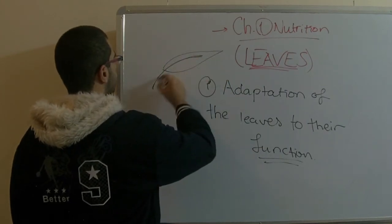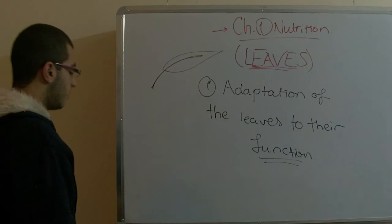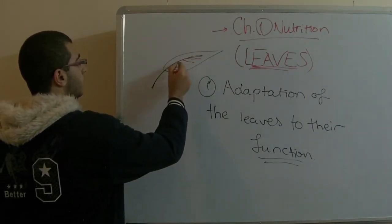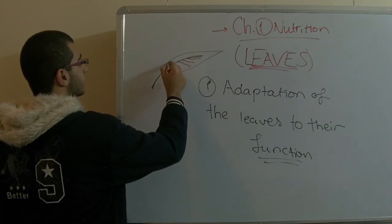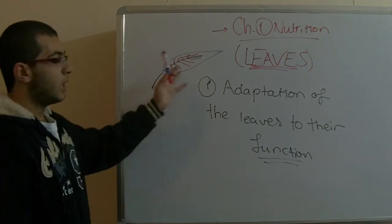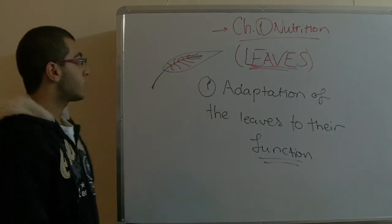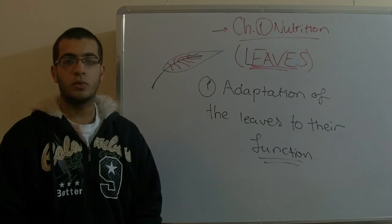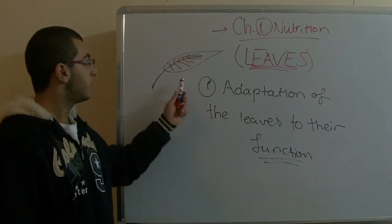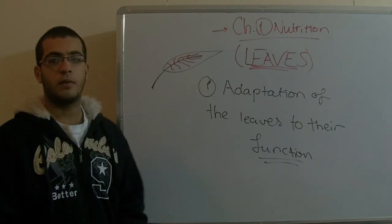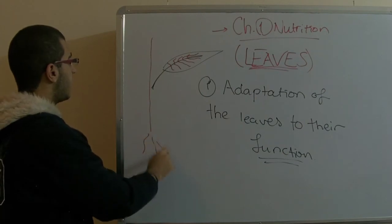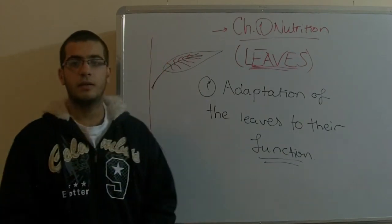From it, there are veins which branch into smaller venules among the whole leaves. Such structures offer a great network that supplies the plant with water and translocates the manufactured food inside the leaf to the whole parts of the plant - to the stem, the roots, the other leaves, and the flowers.